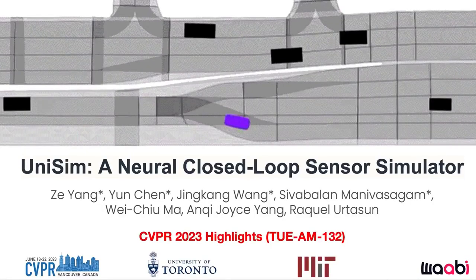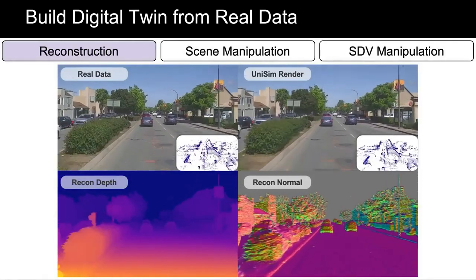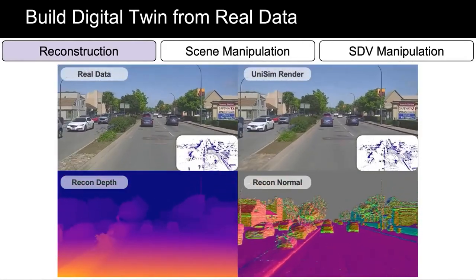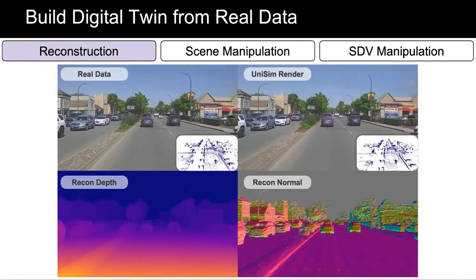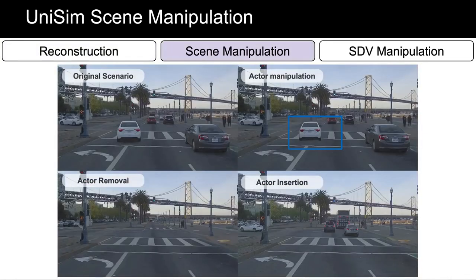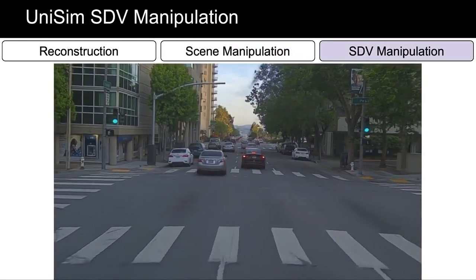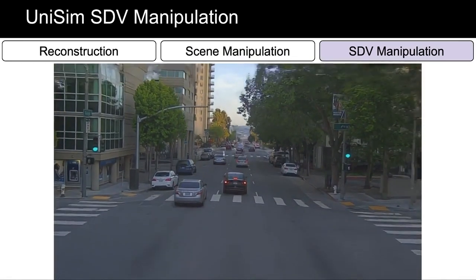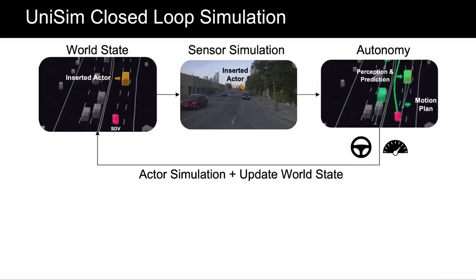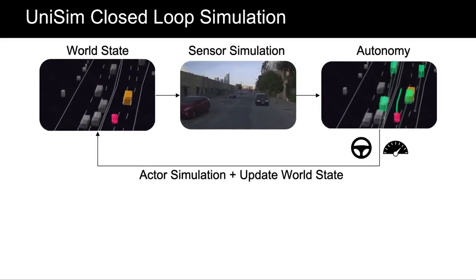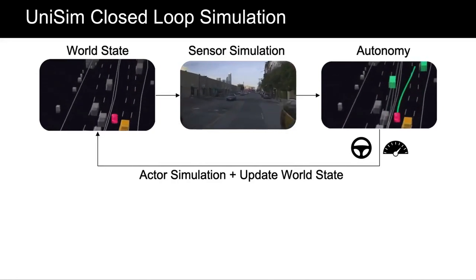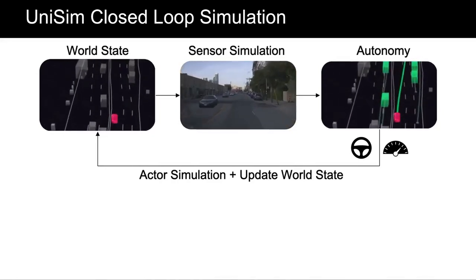Unisim, a neural closed-loop sensor simulator. Unisim reconstructs manipulable digital twins from real collected data. Unisim also reconstructs dense depth and normals, and builds a compositional neural scene representation which allows us to manipulate the scene. Along with reconstructing the original scenario, we can modify a vehicle's route, remove all dynamic actors, and insert new actors into the scene. We can also manipulate the self-driving vehicle's viewpoint to the left, right, or change the camera's sensor position, elevating it or lowering it. All of these capabilities allow us to specify new counterfactual scenarios, simulate realistic sensor data, and run autonomy in a closed-loop fashion. In this example, we insert a new oncoming actor, and the autonomy model and the virtual environment actively interact with each other to create a completely new scenario. This is closed-loop sensor simulation with Unisim.